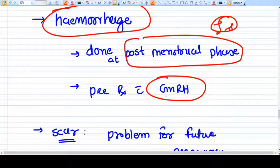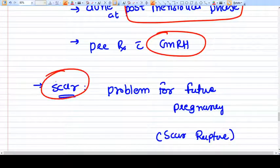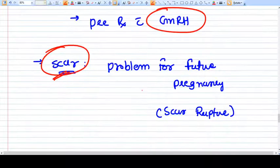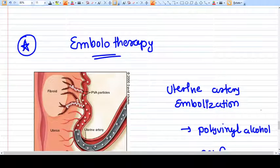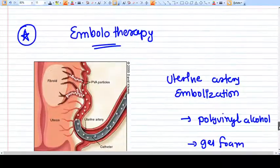Or we can do a pre-treatment with GnRH which will also shrink the size and decrease the blood supply. It also can decrease the bleeding. The problem is a scar also. If the patient wants to have a pregnancy in future, then this scar can be a problem, scar rupture can happen. And in the patients who have a previous myomectomy scar are definitely going for caesarean section rather than normal vaginal delivery.